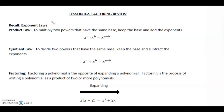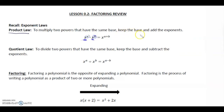0.2 factoring review. Let's recall the exponent laws. The product law for exponents is when we multiply two powers that have the same base — for example, the base would be x, and the powers would be a and b. What we do is we keep the base and we add the exponents.